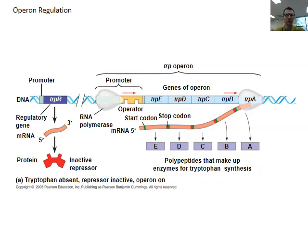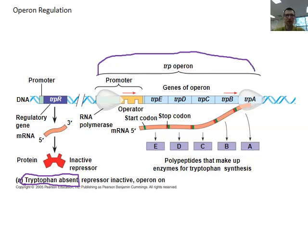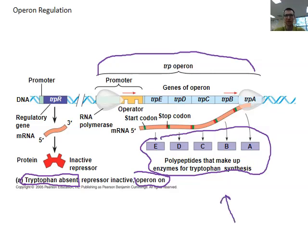In this picture, we've got tryptophan, which is an amino acid that this bacteria needs to make. Tryptophan is absent — there isn't any. So this section of DNA, this operon and operator, is currently turned on, which means it can make an enzyme that will help produce more tryptophan, because we want to increase the amount we have since we don't have any right now.